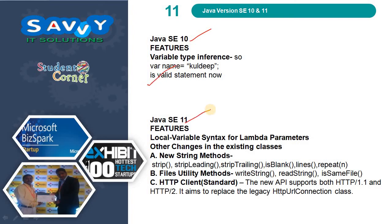In Java 11, local variable syntax for lambda parameters was introduced. Other changes include new String methods: strip, strip leading, strip trailing, is blank, lines, and repeat. New Files utility methods: write string, read string, and each same file. Also, the HTTP client was standardized — the new API supports both HTTP 1.1 and HTTP 2, aiming to replace the legacy HttpURLConnection class.